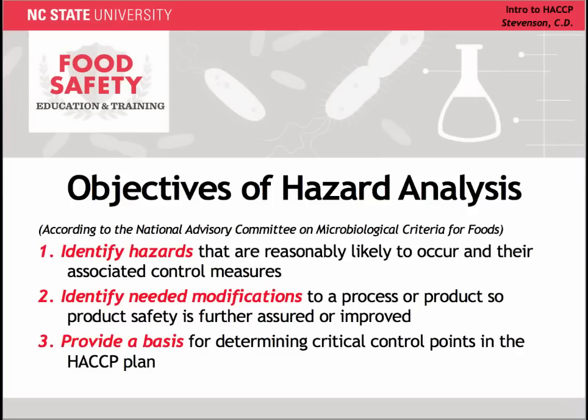According to the National Advisory Committee on Microbiological Criteria for Foods, there are three objectives to the hazard analysis. First, identify hazards that are reasonably likely to occur and their associated control measures. Second, identify needed modifications to a process or product so product safety is further assured or improved. And third, provide a basis for determining critical control points in the HACCP plan.